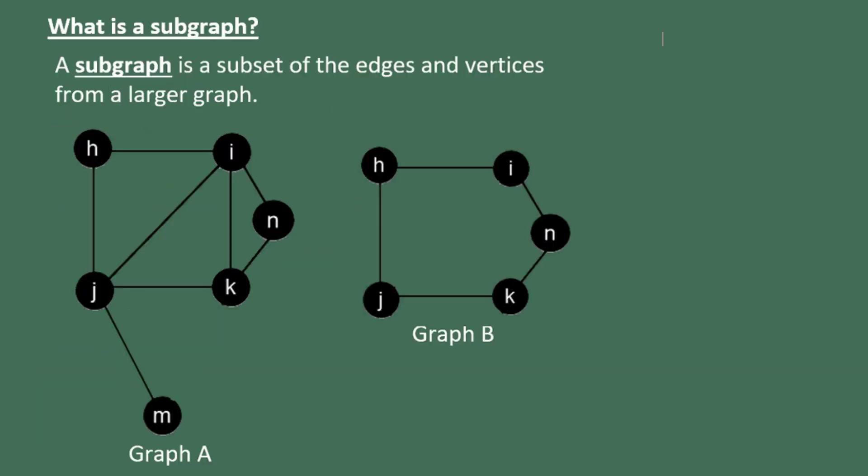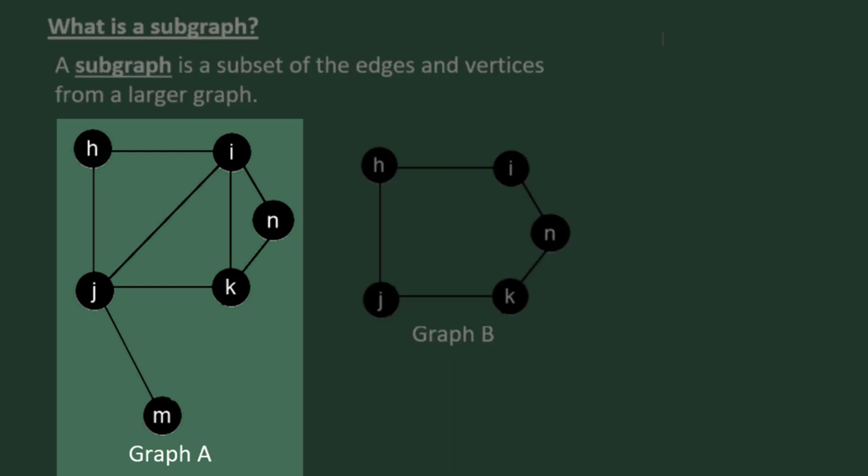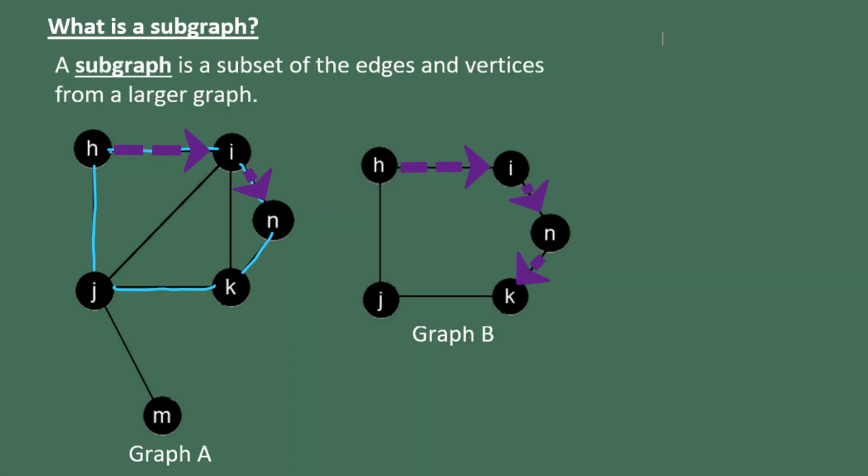We also need to remember what a subgraph is. A subgraph is a subset of the edges and vertices from a larger graph. For example, graph A on the left has a subgraph that includes H, I, N, K, and J, and all of the edges that connect them except these two in the middle. So graph B is a subgraph of graph A.